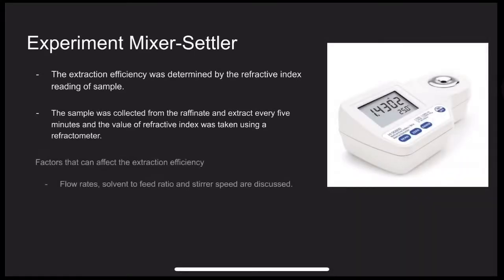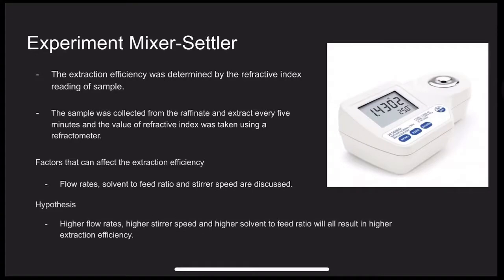The sample was collected from the raffinate and extract every 5 minutes and the value of refractive index was taken using a refractometer. There are some factors that can affect the extraction efficiency such as flow rates, solvent to feed ratio, and stirrer speed. This study recommends that higher flow rates, higher stirrer speed, and higher solvent to feed ratio will all result in higher extraction efficiency. Let's proceed with the theory part, which will be presented by Shaila.